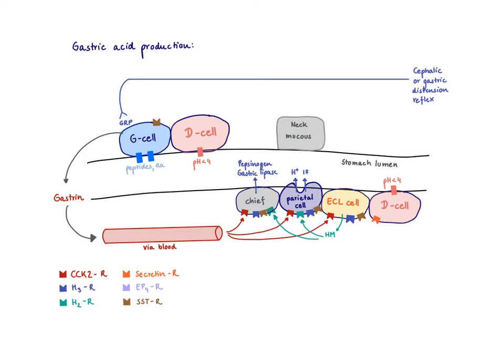The CCK2 receptor does not only sit on the parietal cell — it also sits on the neighboring ECL cell. The ECL cell, once it gets stimulated via gastrin, starts to make histamine. So gastrin is the major stimulus for histamine production in the ECL cells.